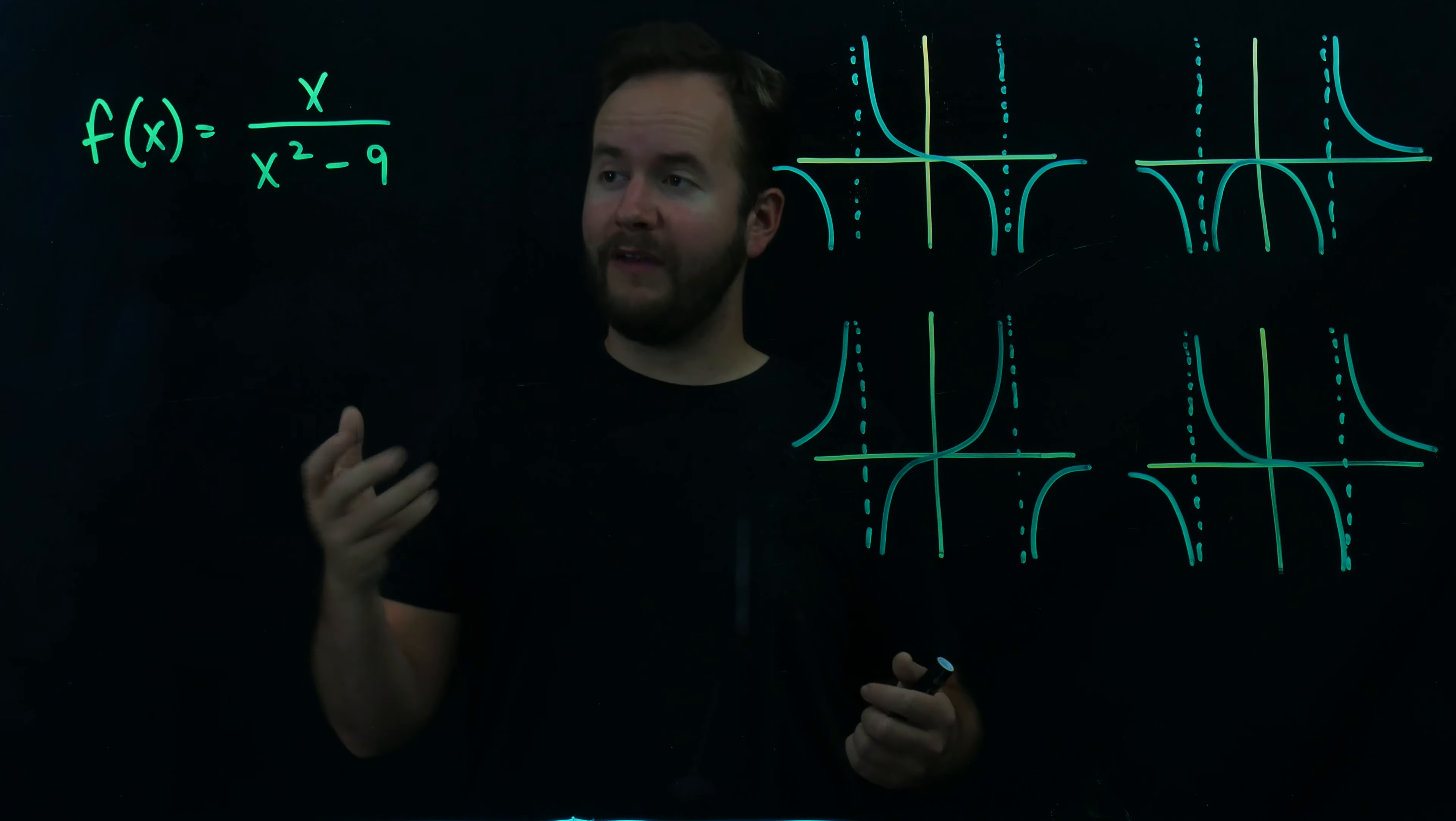What we're going to do next is play the game of where does the graph exist relative to the x-axis? That is to say, is it positive or is it negative? We're going to look at a number line at 0, negative 3, and 3, using the numbers of the x-intercept and the asymptotes, and play the game of what kind of value do I get when I plug in a number larger than 3 into this function?